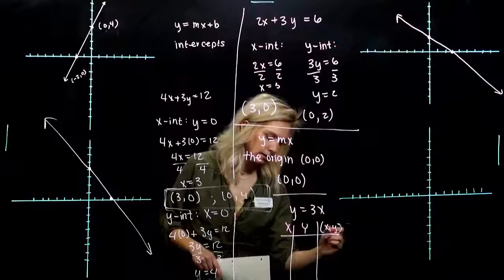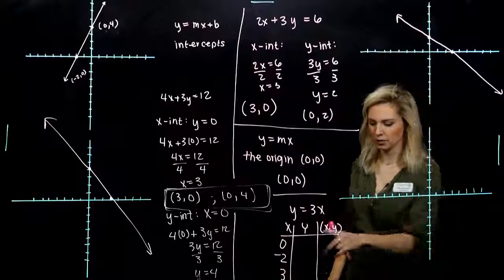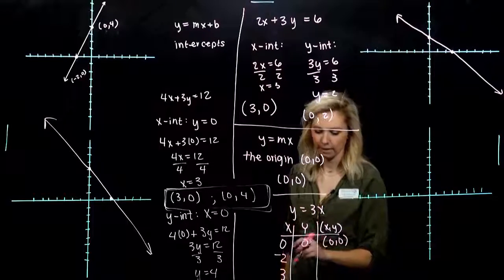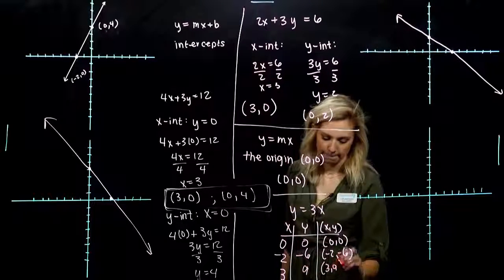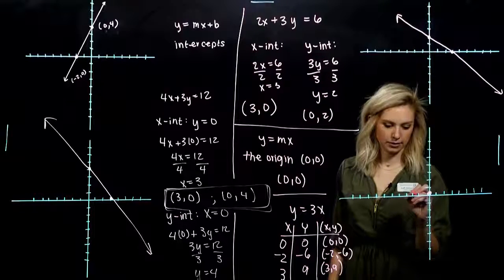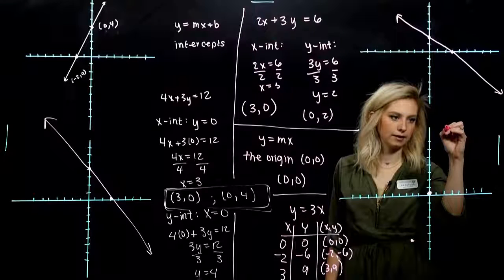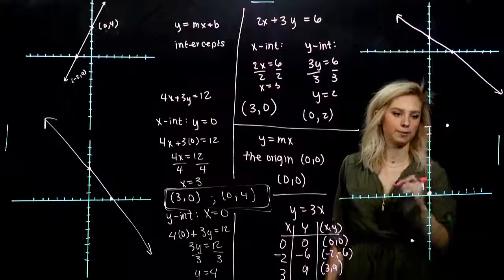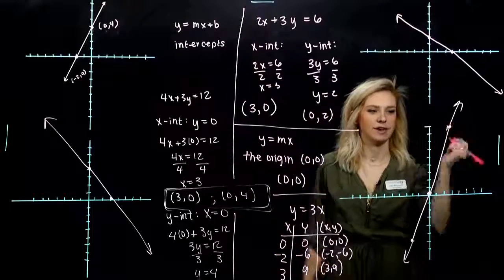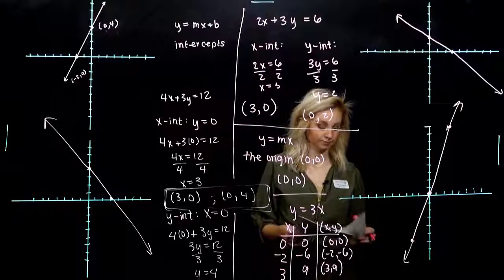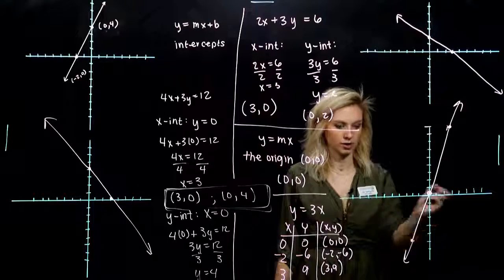Setting up a table with x-values and y-values: I'll use 0, -2, and 3, since they're small enough to fit on the grid. When x is 0, y is 0 — through the origin. When x is -2, y is -6. When x is 3, y is 9. Plotting those three points and drawing the line confirms both the x-intercept and y-intercept are at (0, 0), since that is the only point where the line crosses both axes.